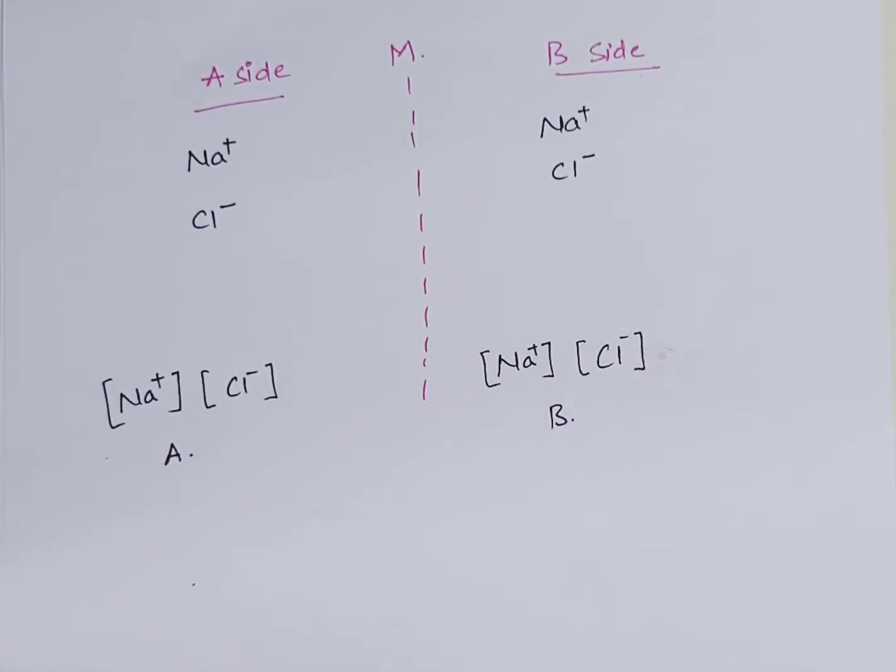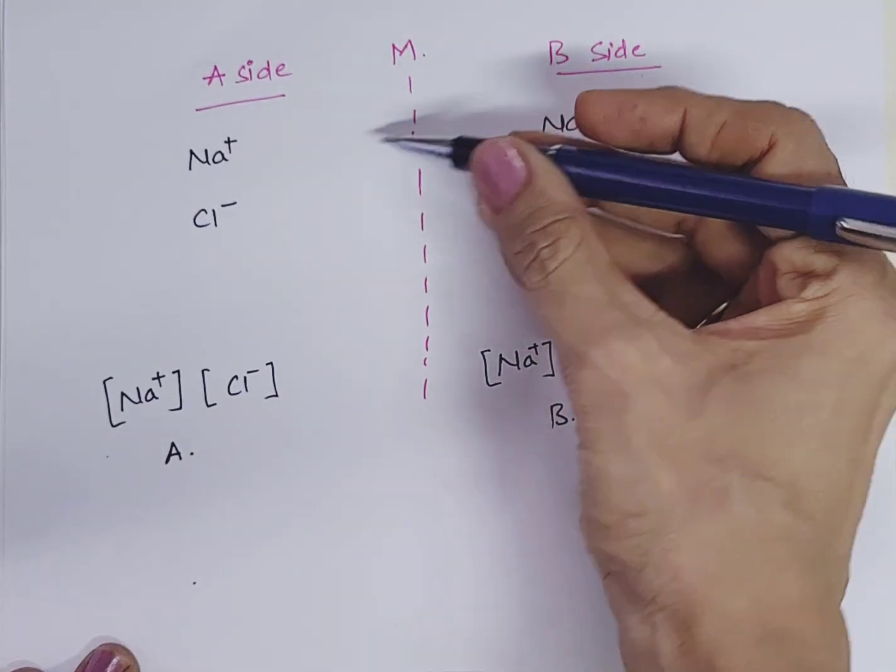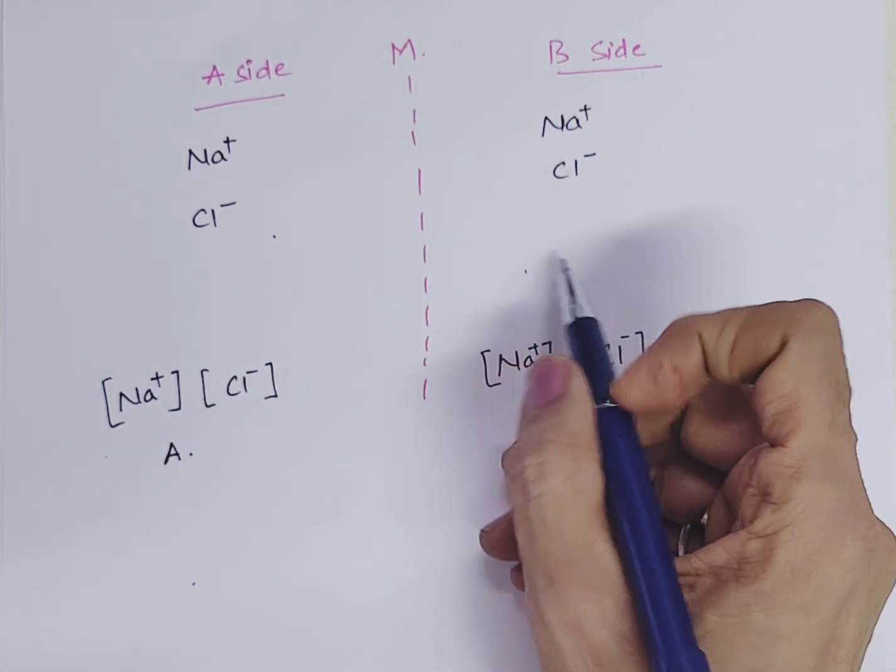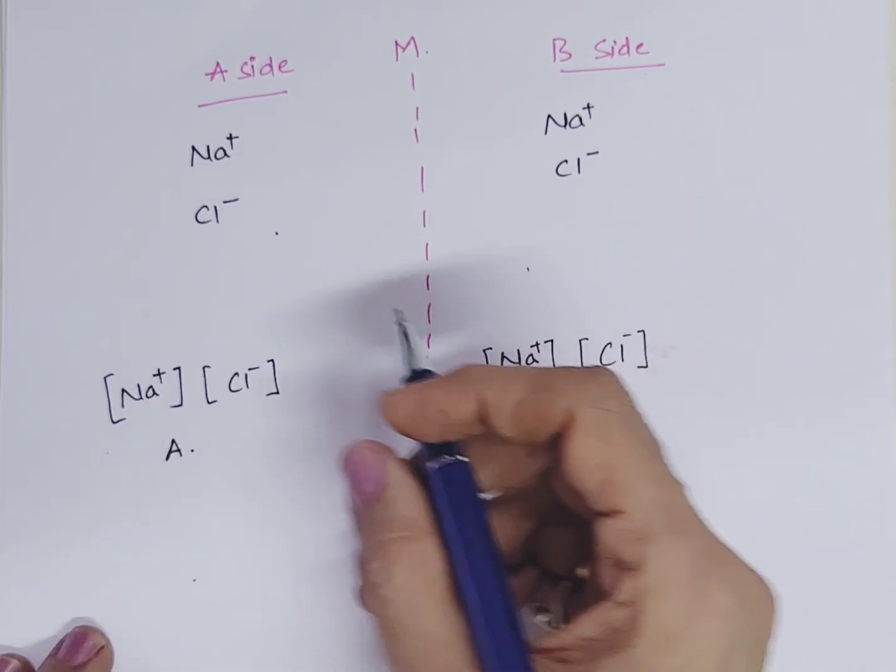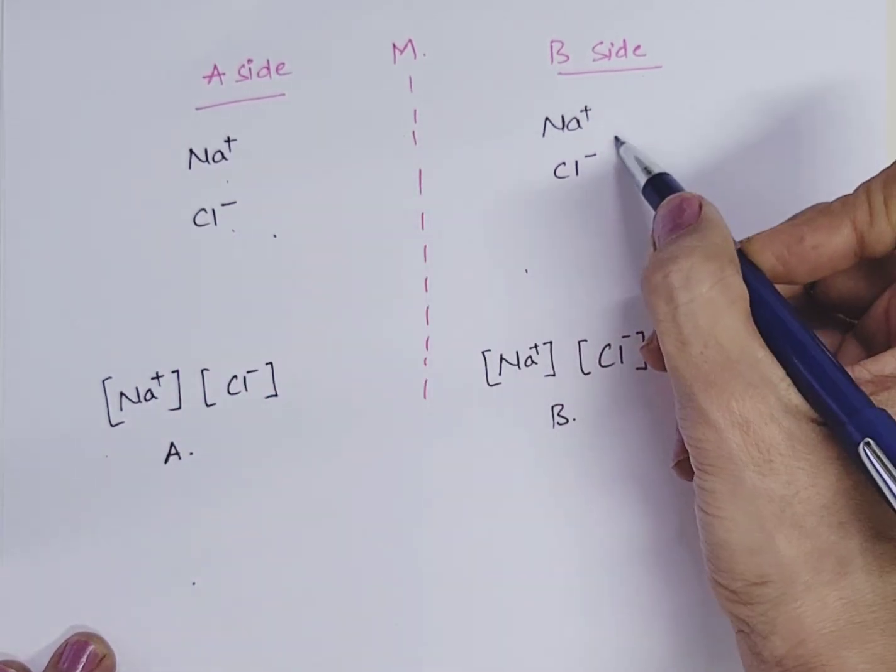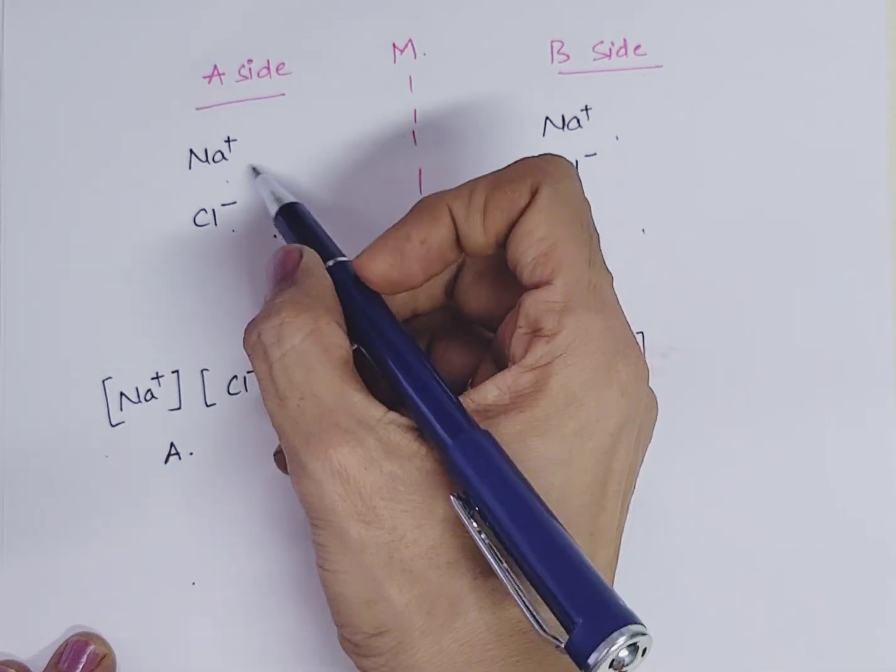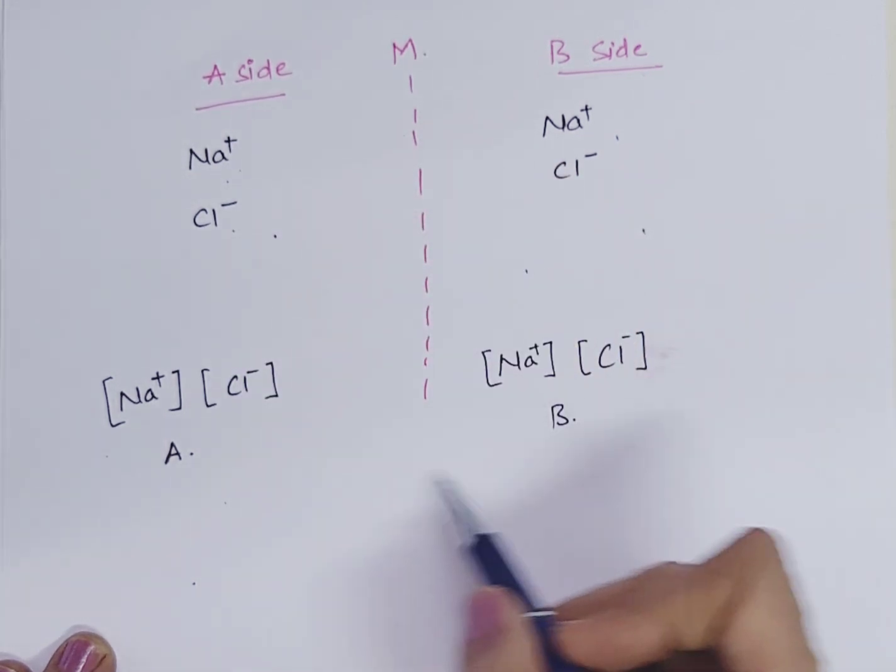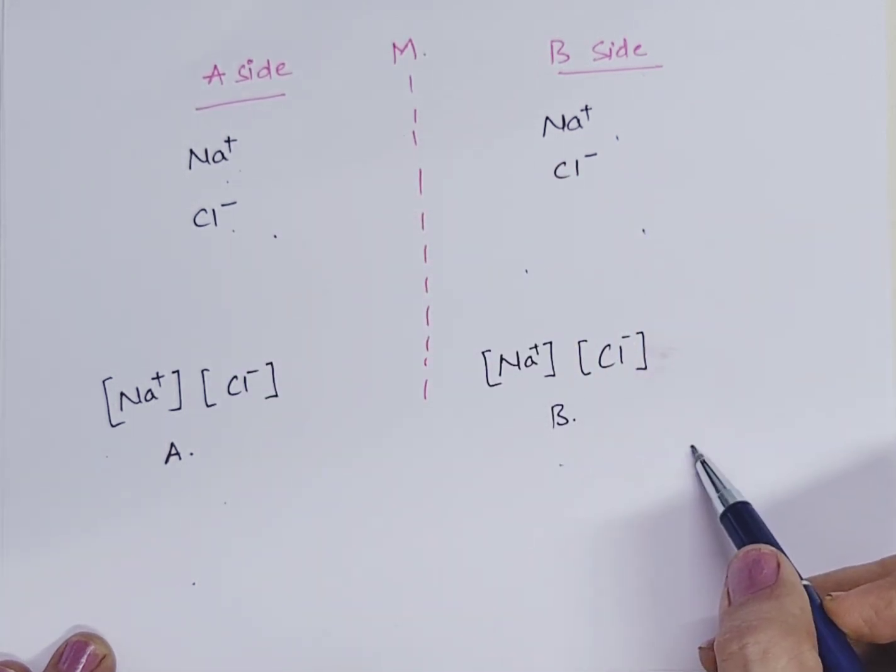Here you can see, this is semi-permeable membrane and this is side A, this is side B. And these are diffusible ions, sodium chloride, here also sodium chloride. So, product of sodium and chloride on A side is equal to product of sodium and chloride on B side. This is Donnan's equilibrium.